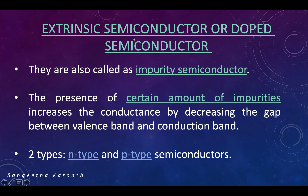What is an extrinsic semiconductor? If intrinsic is a pure semiconductor, then extrinsic is nothing but a doped semiconductor. Doping is nothing but adding an impurity, so these are also called impurity semiconductors. In such semiconductors we add a certain amount of impurities. When these impurities are added to an intrinsic semiconductor, the conductance will be increased. Two types of impurities can be added, giving two types of semiconductors.